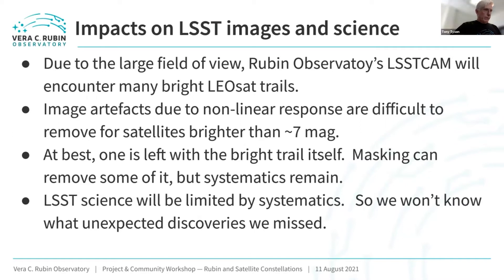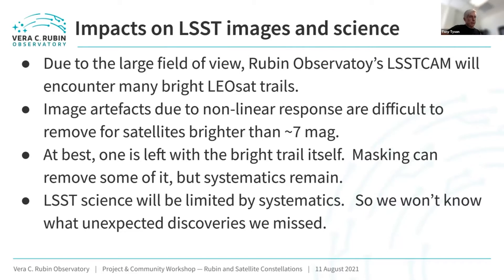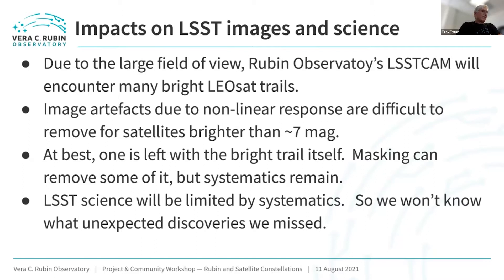Good to be with you today. I'm going to outline some of the challenges that we've had with regard to these satellites. Because of the large field of view of the Rubin Observatory, the camera itself will encounter many bright low-Earth orbiting satellite trails — between one and two per exposure generally speaking during the survey. And there are some imaging artifacts due to the nonlinear response of the charge coupled devices that are difficult to remove.